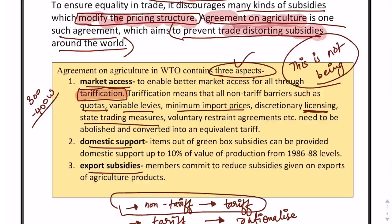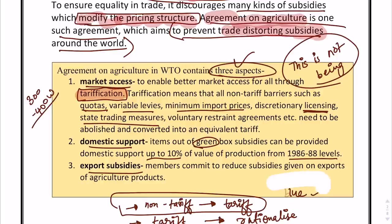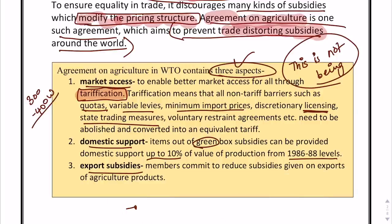Domestic support states that items outside green box subsidies can only receive domestic support up to 10% of value of production based on 1986 to 88 levels. There are three boxes: green, amber, and blue. Whatever is not in green — meaning it is in amber or blue — the maximum subsidy that can be provided is 10% of value of production from 1986 to 88 levels. This is the area where India has opposed WTO rules.